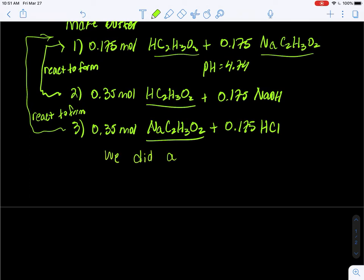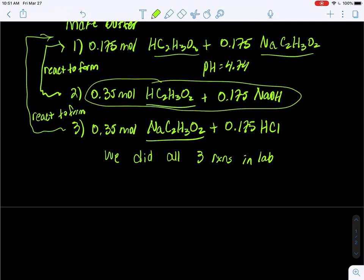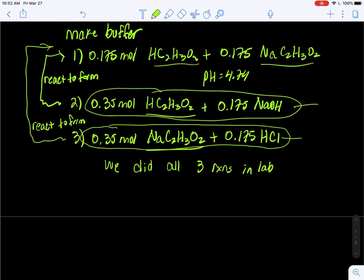We actually did all three of these reactions in the lab. We took test tubes that contained acetic acid and we dribbled in sodium hydroxide, and we noticed that it was quite resistant to pH change as it entered the buffer region. We also took sodium acetate and dribbled in hydrochloric acid, and when there was a one-to-one mixture of the weak acid and weak base in solution, it created a buffer. These mixtures here will create a buffer.